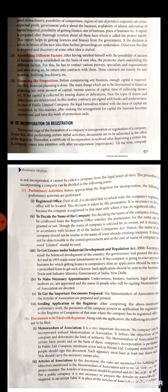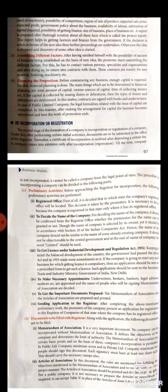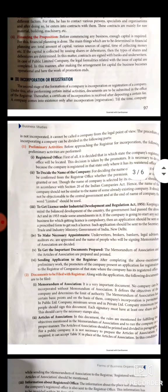After completing the above formalities, the promoters present an application to the registrar for the registration of the company. The documents to be filed with the registrar: first is MOA. MOA is the main document of every company. No company can be registered without MOA. MOA defines the object of the company — the purpose for which it is established — and also specifies the scope of its activities, meaning the boundaries within which the company can operate. Next is Article of Association.